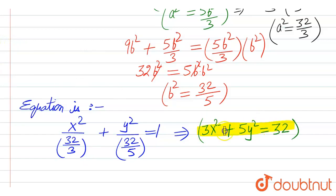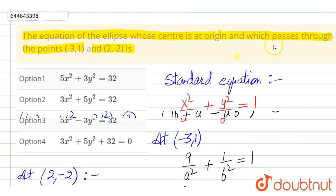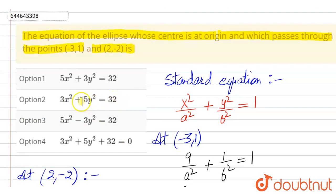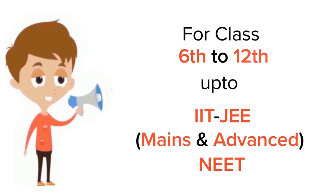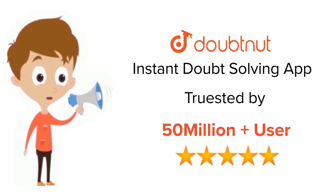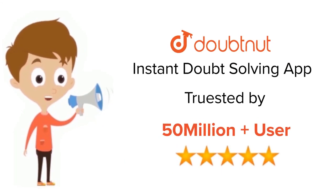We can check the options now. The equation is 3x² + 5y² = 32, which is the correct answer. Thank you. For Class 6 to 12, IIT JEE and NEET level, trusted by more than 5 crore students — download the Doubtnut app today.